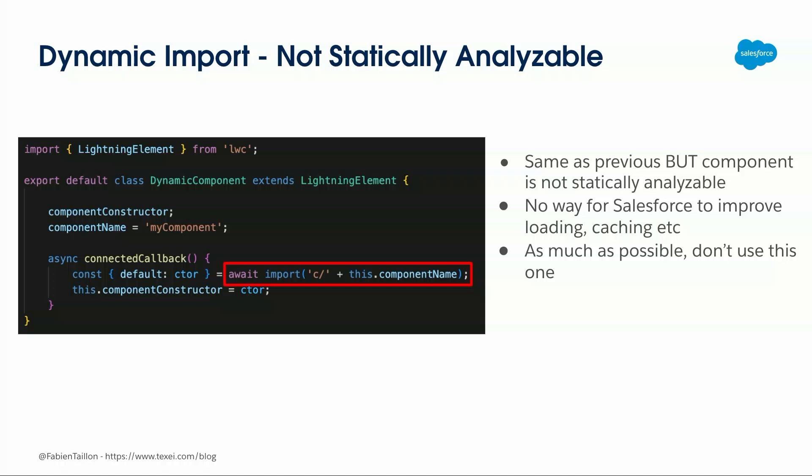For example, Salesforce's own Lightning Input — which is made of lots of different input types like text, date, and others — doesn't use Dynamic LWC. They use LWC if/else: a big parent component with all the sub-components inside, and depending on the type selected, it renders one or the other, because it's a limited and known list of components. That's better for performance than having something fully dynamic that can't be analyzed.